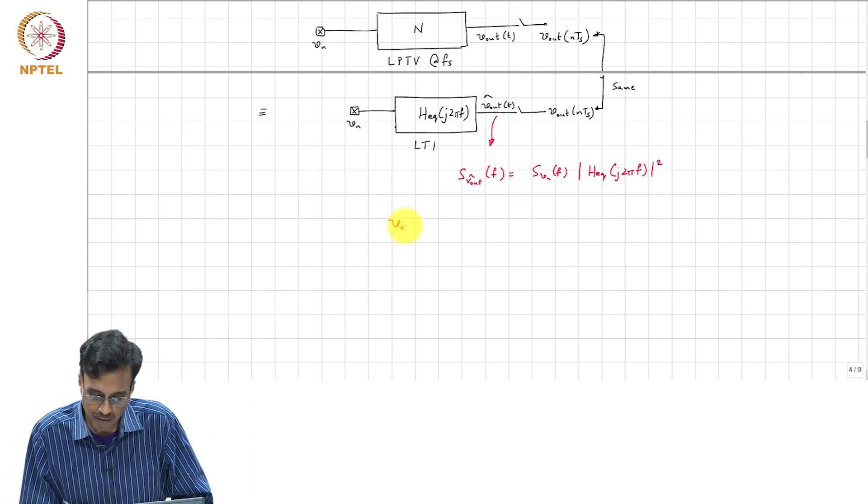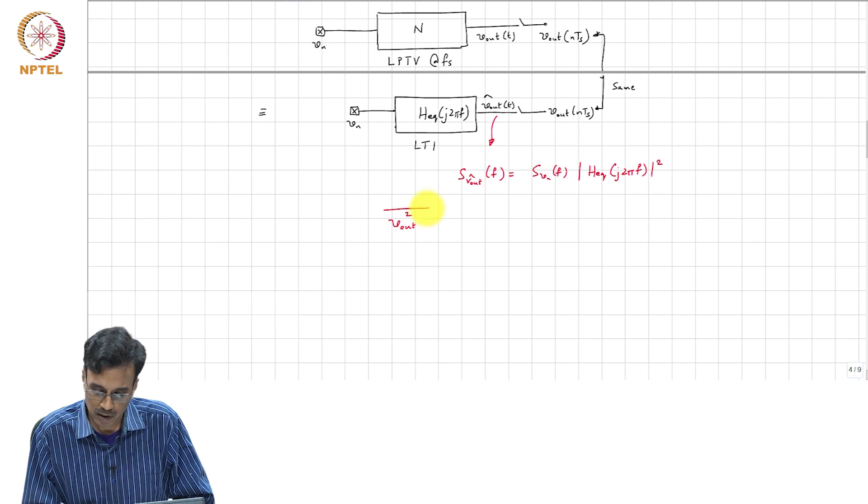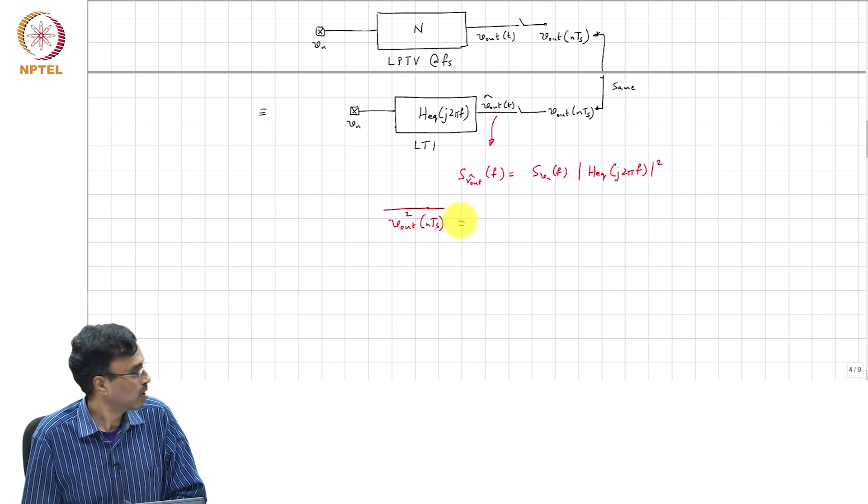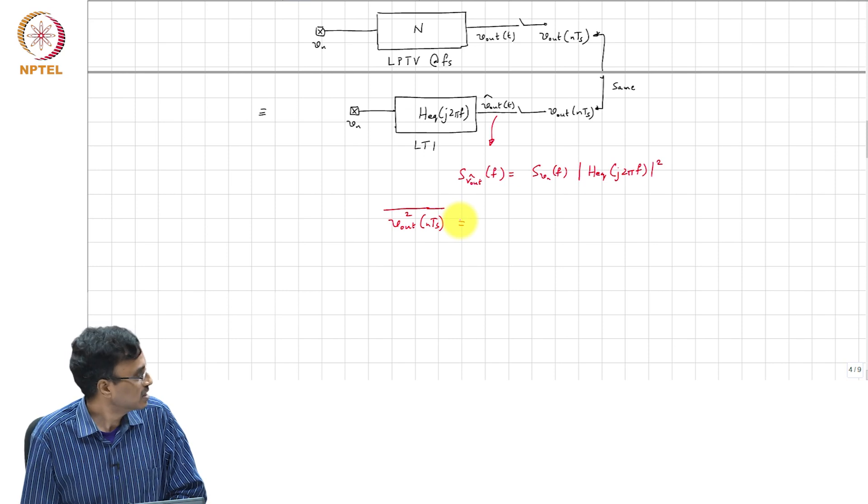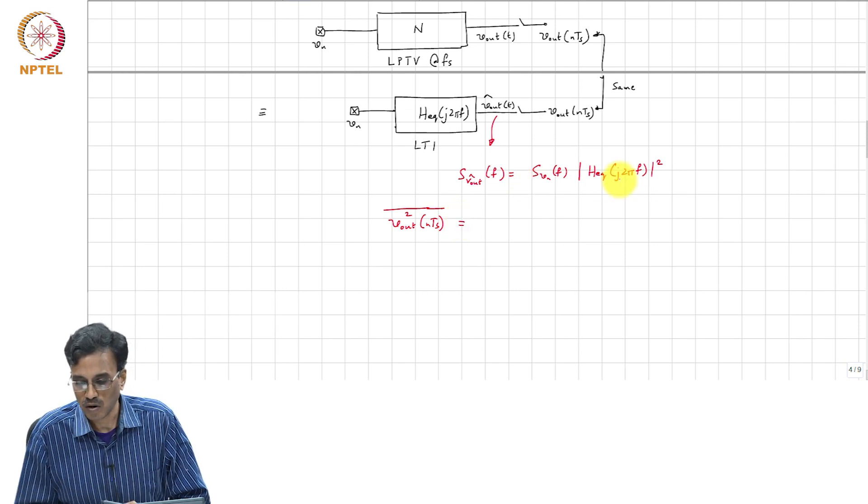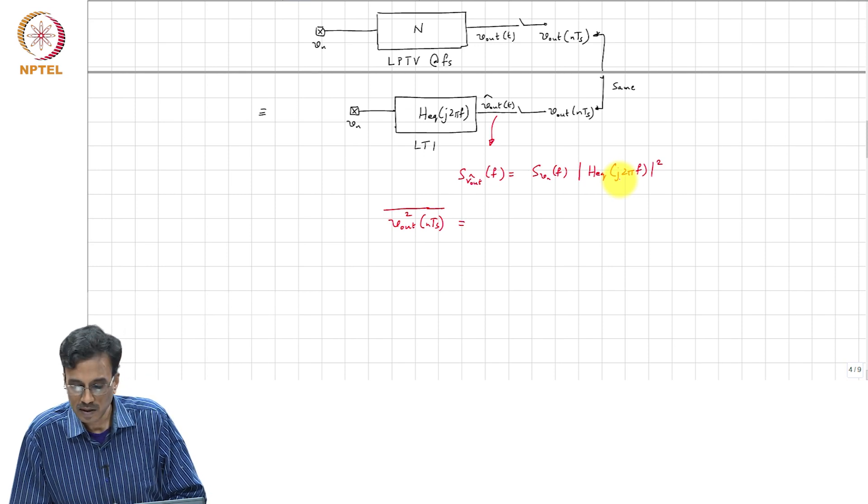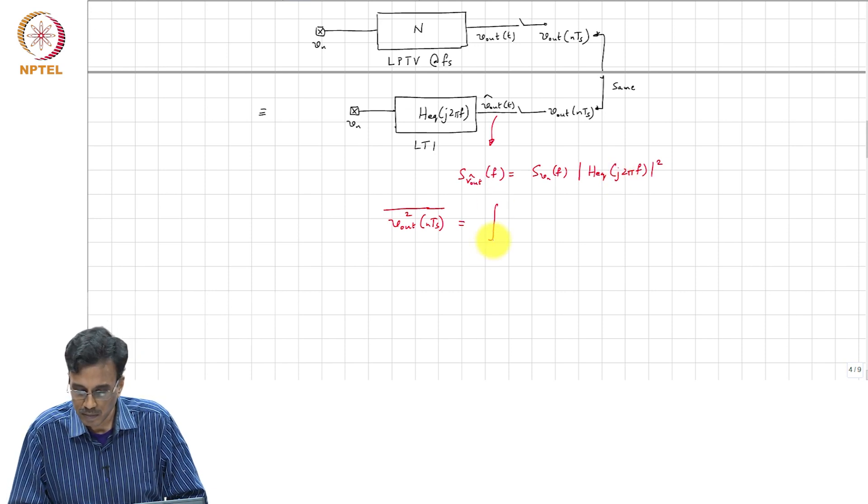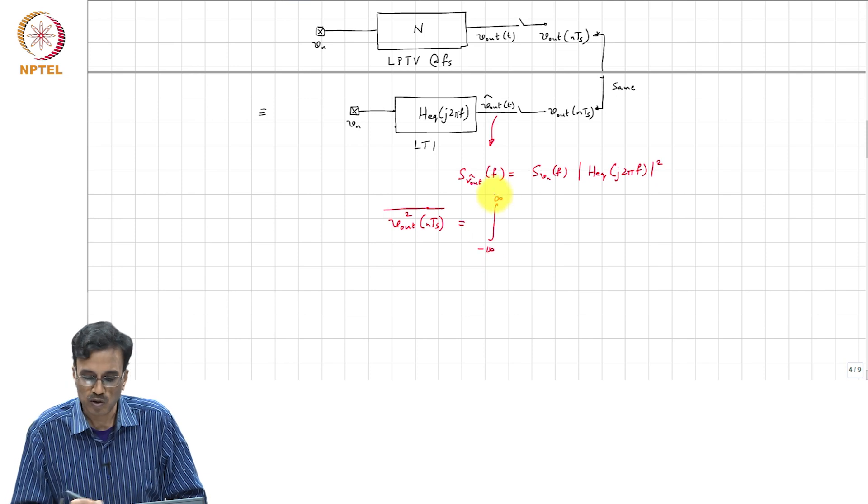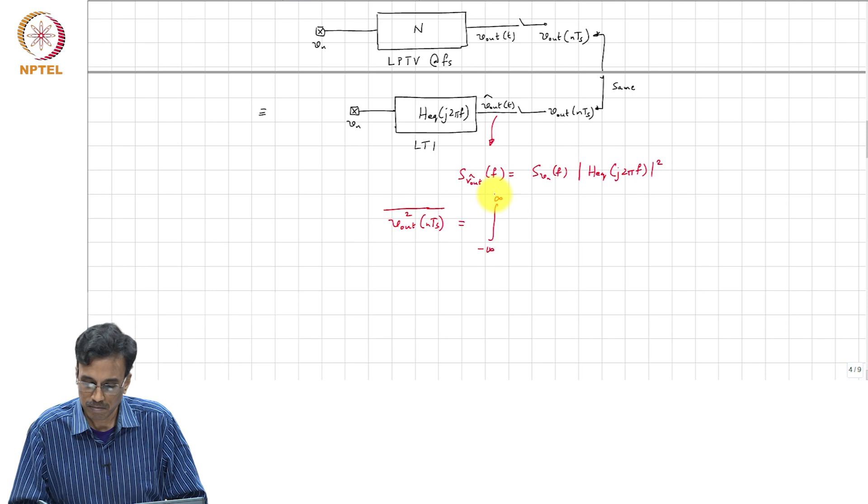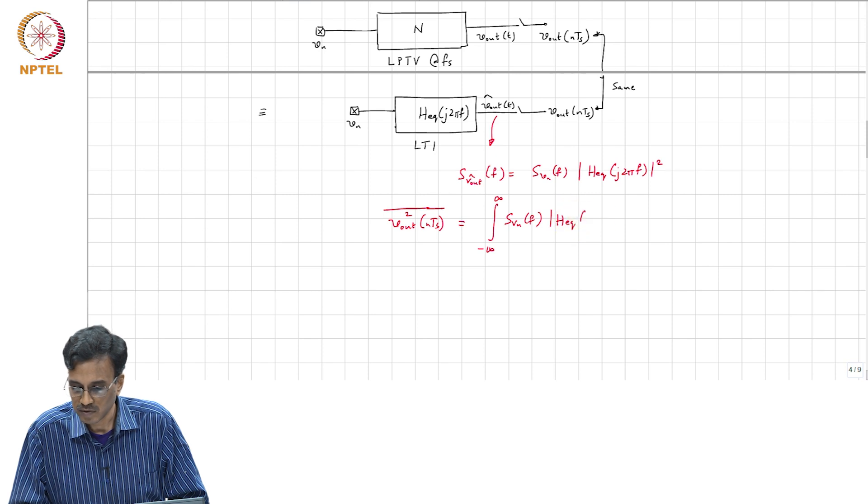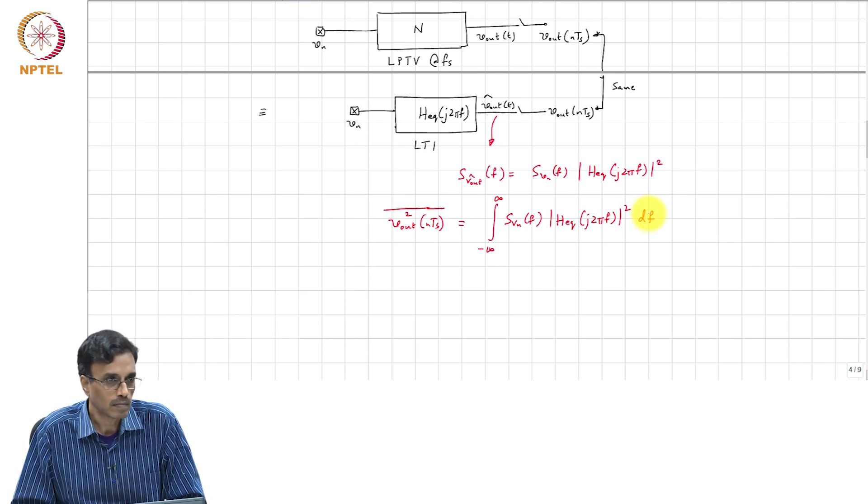So, the mean square value of the samples is simply—how do you think we can do this? This is the spectral density of the waveform at the output. So, if you want to find the mean square value, you integrate this from minus infinity to infinity or 0 to infinity depending on if you are working with single-sided or double-sided spectrum. So, S_V_N of F, H_equivalent of J 2 pi f, whole square dF.